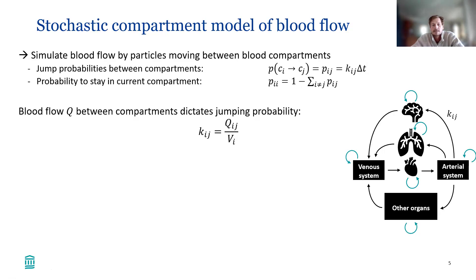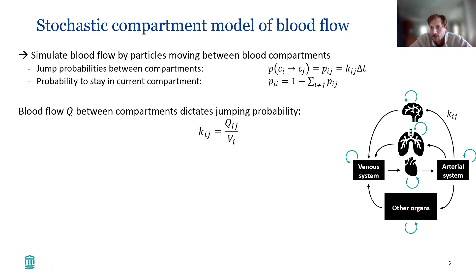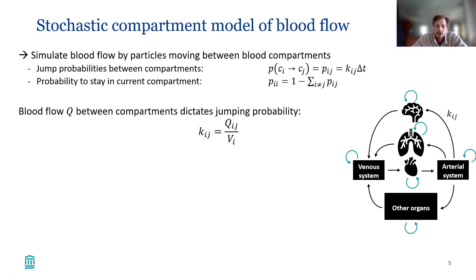The exchange rates between compartments and the time step determine the jumping probabilities. The probability to stay in a compartment is one minus the sum of all jumping probabilities. This is determined by the flow between compartments — for example, how much blood flow does the brain get relative to how much blood volume is in the brain. These quantities are known; people have studied them, so there are reference values which we used.